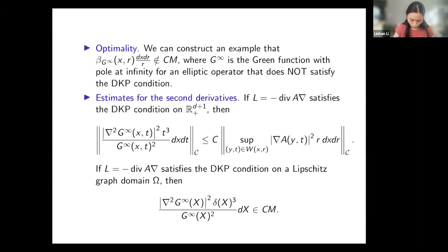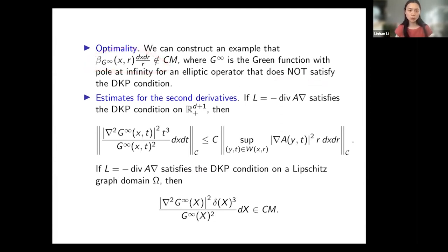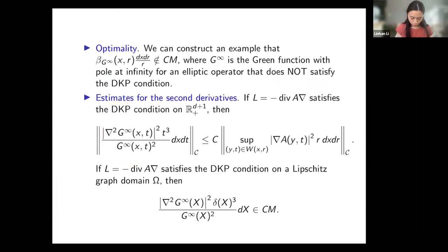A few remarks: First, the class of operators we consider is essentially optimal — we can construct an elliptic operator that does not satisfy the DKP condition for which the corresponding Green function is not a Carleson measure on the upper half space. Second, as a corollary, a Calderón-Zygmund type argument gives an estimate for the second derivative of the Green function, with precise control of its Carleson norm by the Carleson norm of the coefficients. Third, since this class of operators is preserved under Lipschitz change of variables, the result extends to Lipschitz graph domains.